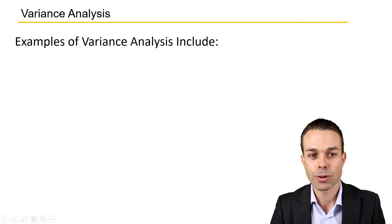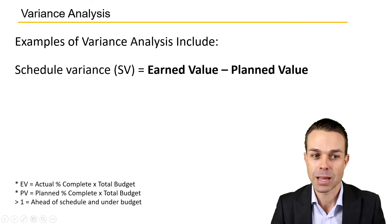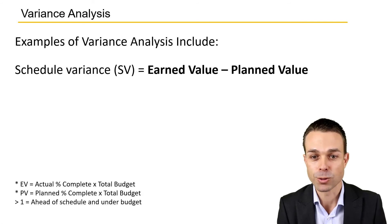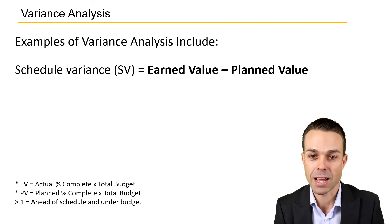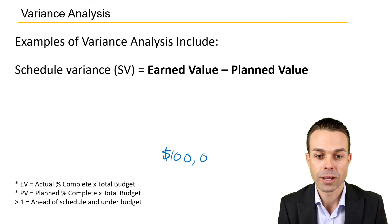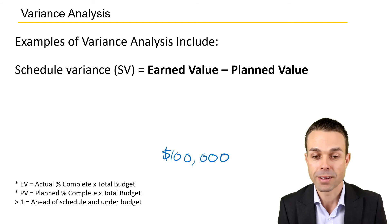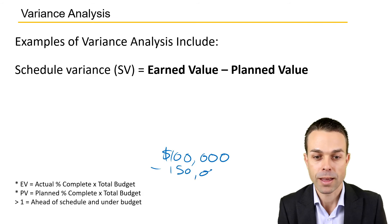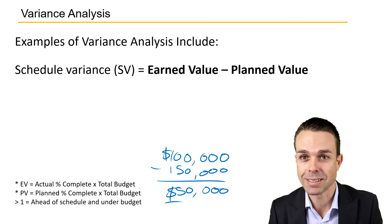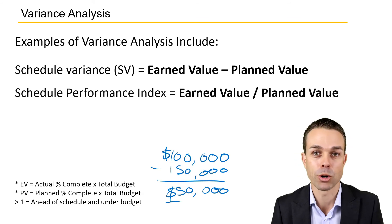With variance analysis, we might have examples such as schedule variance, where we've got our earned value minus our planned value. For example, let's say we've earned $100,000 worth of value in our project, but we had actually planned $150,000 worth of value. Then ultimately, we are $50,000 behind in our project currently.